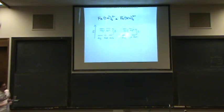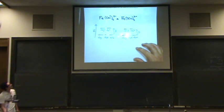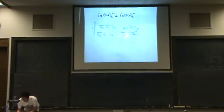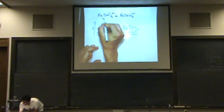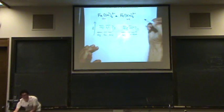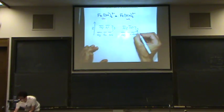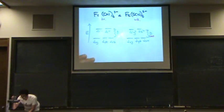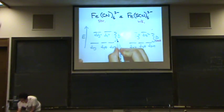Which one will have the smaller delta, the one on the right or the one on the left? Well, this we said is strong field. And this we said is weak field. From the spectrochemical series. So this is small. And this delta, let me zoom in a little bit here. This delta is large.